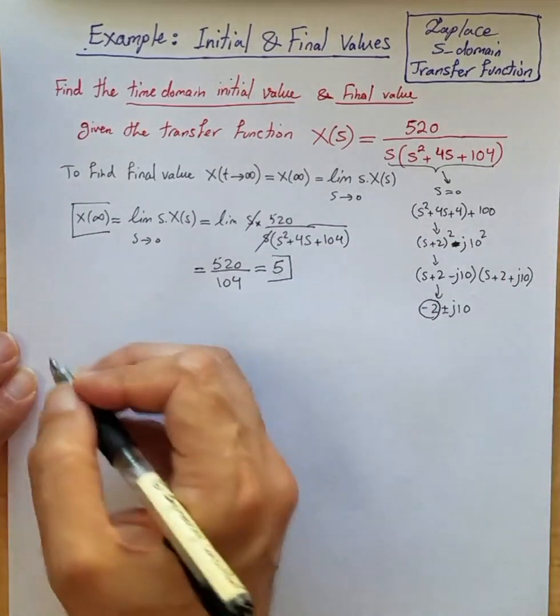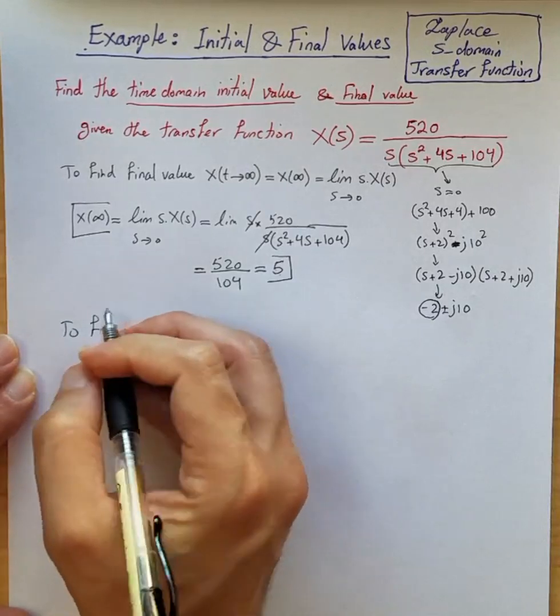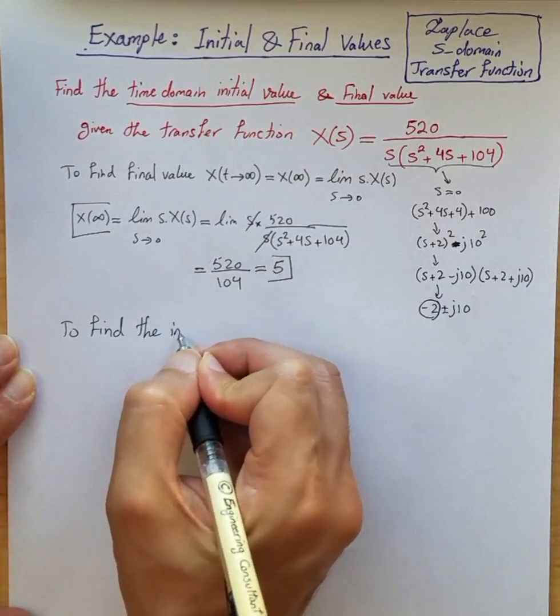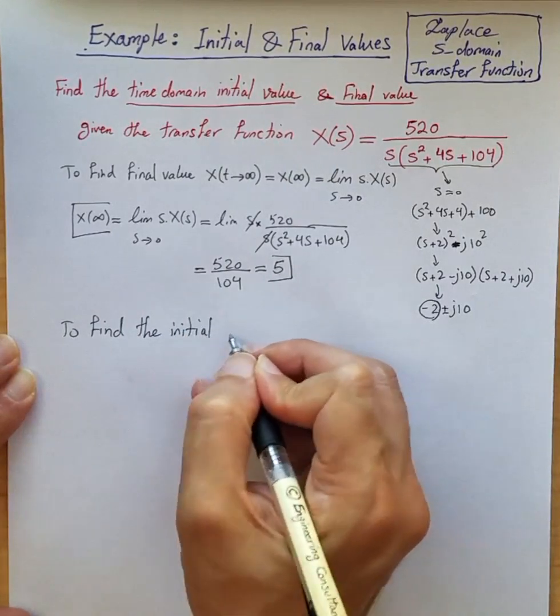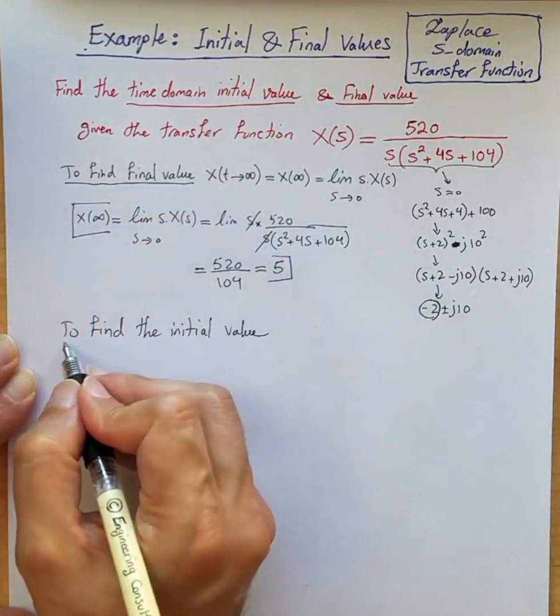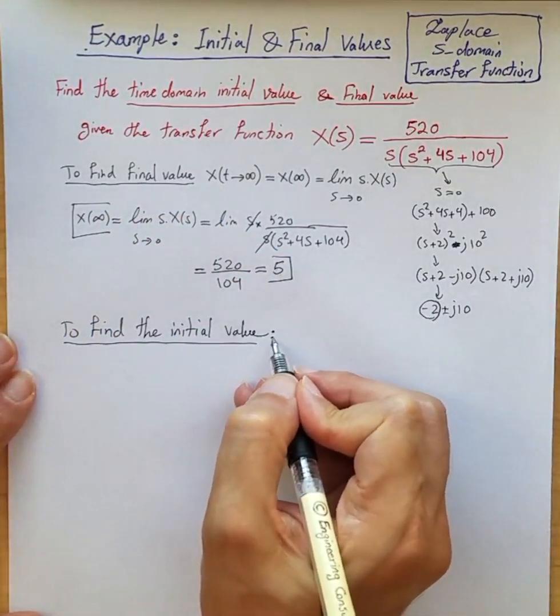Now for the initial value. This was to find the final value, and to find the initial value, same argument, meaning that both the s-domain Laplace transform of the function and its derivative should exist.